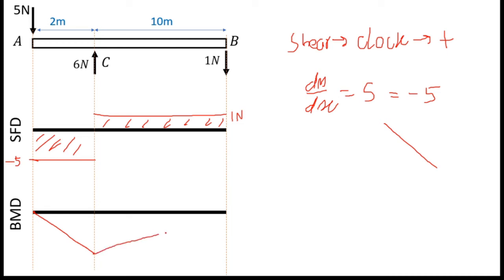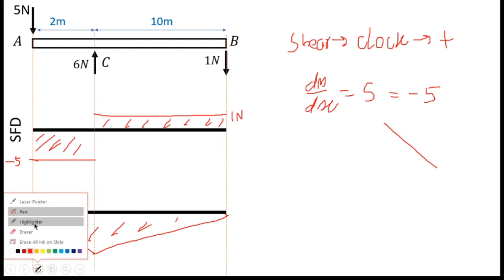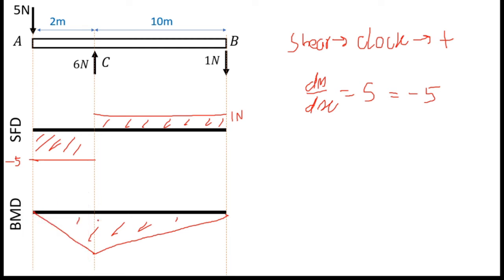The derivative is in the program. You would use the derivative — it is the right direction. The derivative here is the derivative, where x is the right direction. If you find the derivative, you would use the derivative.